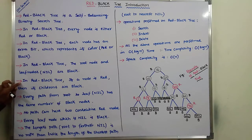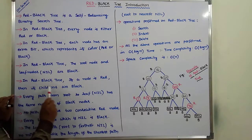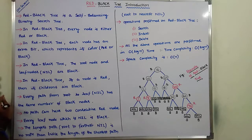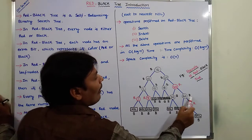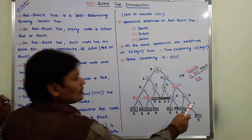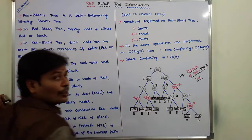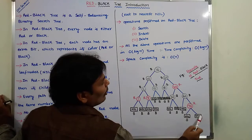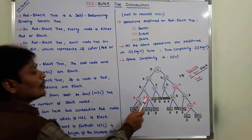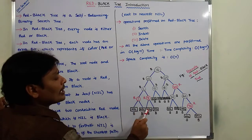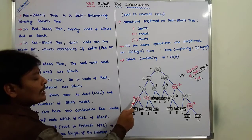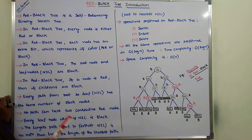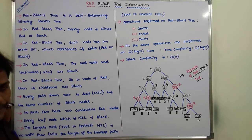In the red-black tree, if a node is red, then its children are black. For example, if a node is red, then its children 30 and 60 are black nodes. Node 70 is a red node, and its children are nil nodes which are black. Node 7 is a red node and its children are nil nodes which are black. Similarly, node 1 is a red node and its children are black nodes.